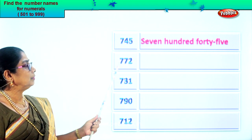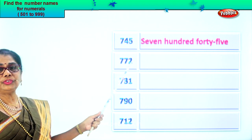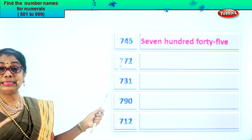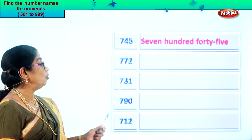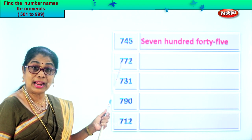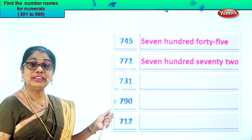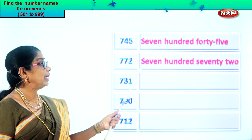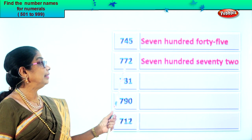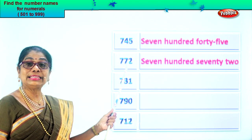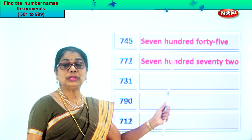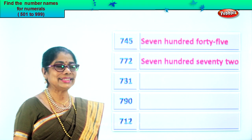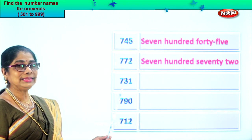Look at this. We have seven, seven, two. Two in the ones place, seven in the tens and seven in the hundreds place. Let's read the numeral: seven hundred seventy-two. So first we write seven hundred, then we write seventy-two. Seven hundred seventy-two. Good.